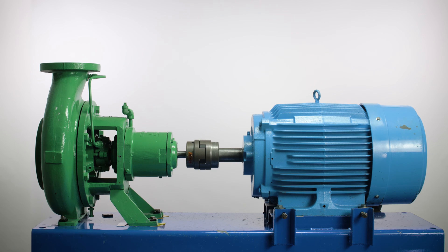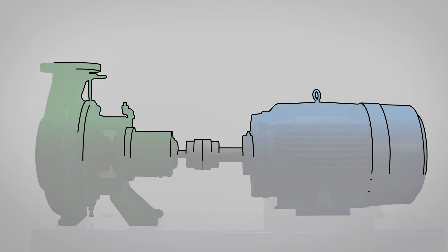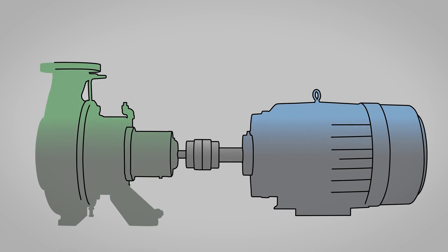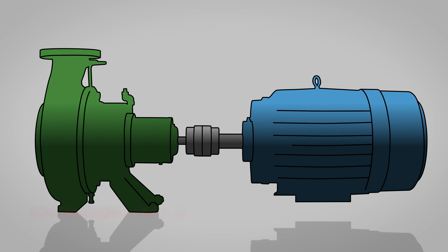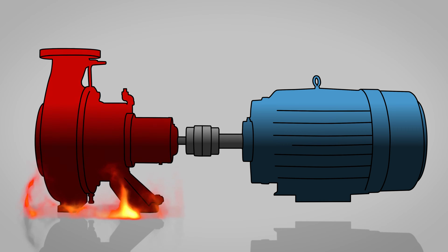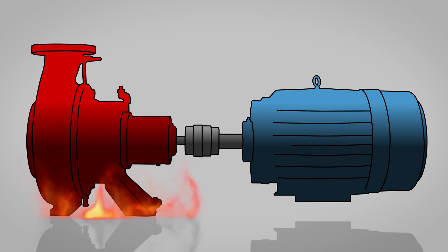Thermal growth is the amount that the center lines of a machine change, both vertically and horizontally, due to temperature changes. This occurs because as the temperature of the machine rises, the metal expands.